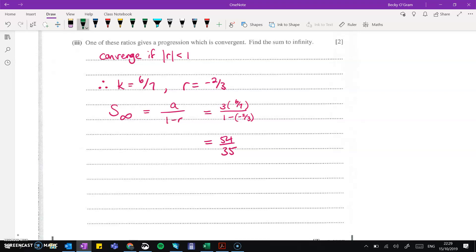And then part three, one of these ratios gives a progression which is convergent. Now the rules for progressions to converge is that the modulus of the ratio has to be less than 1. So the ratio itself has to be between minus 1 and 1. So that's this one here. We had our options of minus 2 thirds or 4 thirds. 4 thirds would be bigger than 1, so that's not going to work. Now to get the ratio of minus 2 thirds, k is 6 over 7. So now we put those values into our sum to infinity formula, and we get the answer 54 over 35.